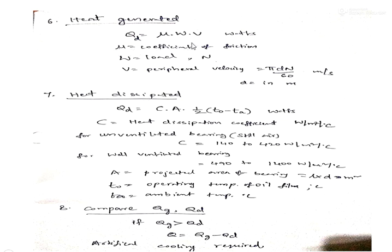Find the heat generated using the formula: Q_g = μ × W × V, where μ is the coefficient of friction from the previous step, W is the load on the journal in Newtons, and V is the peripheral (rubbing) velocity of the journal given by πDN/60, with D in meters to get V in meters per second and Q_g in watts.